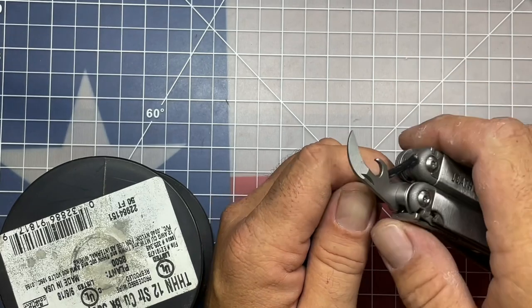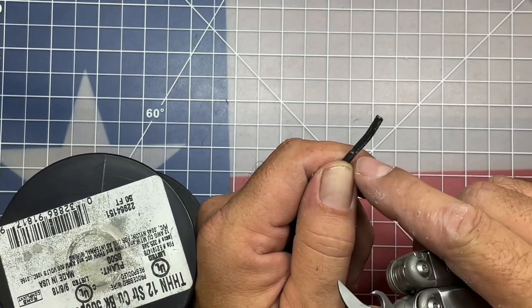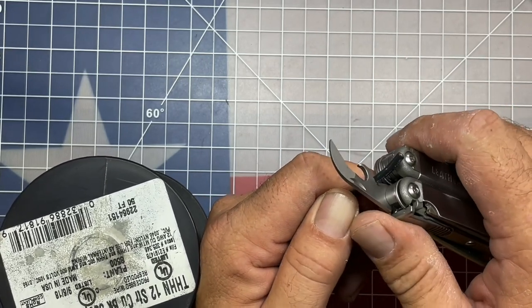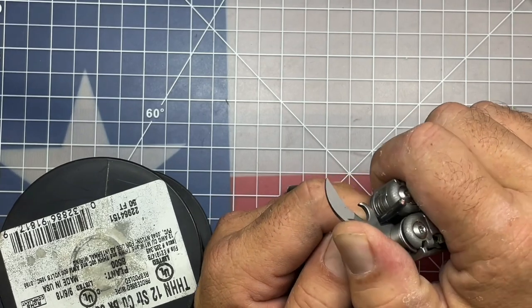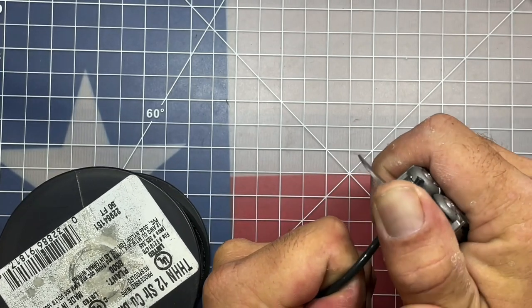Now that I've got it scored a little bit, what I want to do is take it up on an unscored portion of the wire just to get a grip on it, and then you can pull it out.